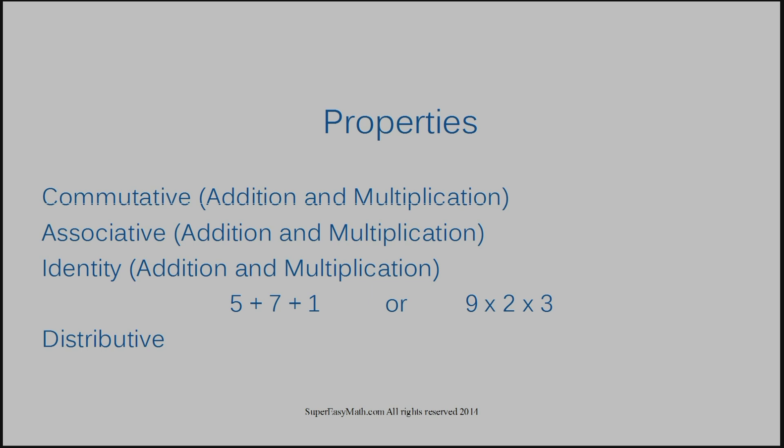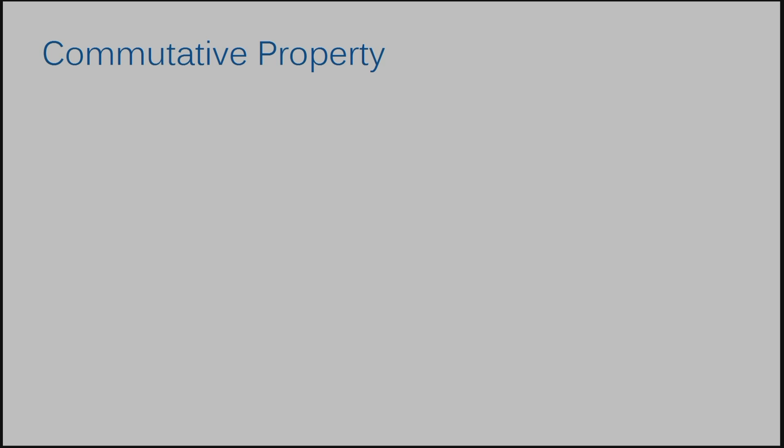Let's jump into the commutative property. If you hear the word commutative, you may recognize the root word commute. If you hear someone talking about their daily commute, they're typically talking about the trip they take from home to work. That's a really great example to use here because it has the same premise — the root word is the same, and that's why this particular property was named this.